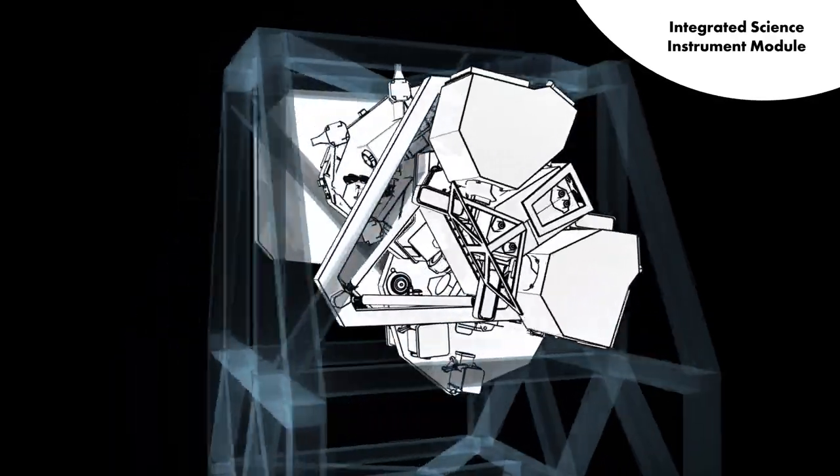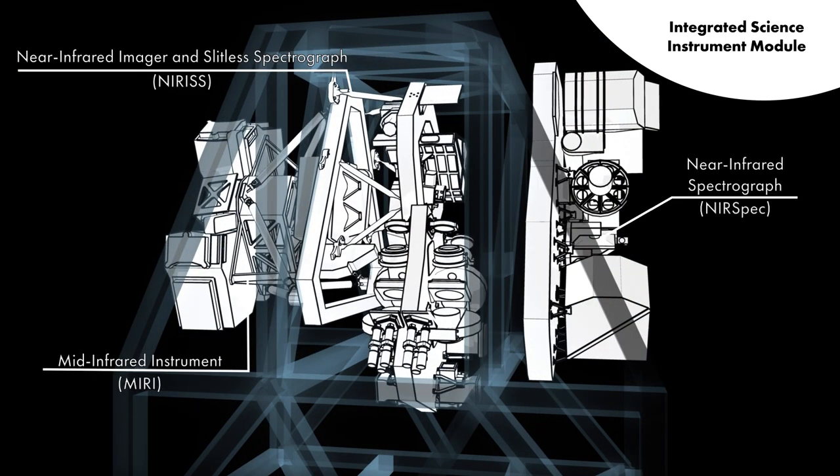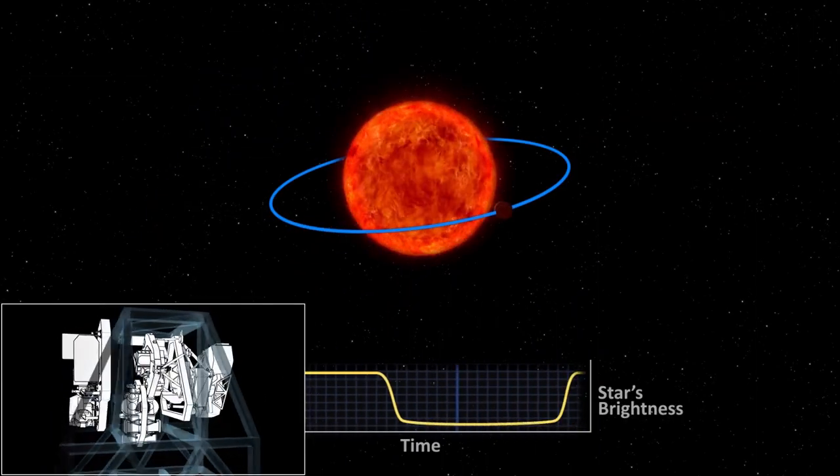The Webb Telescope has four spectrographs, which will be trained on a few lucky exoplanets. We'll learn about the atmospheres of these planets by seeing their fingerprints as a shadow against their bright host star, in a similar way to the transit technique.